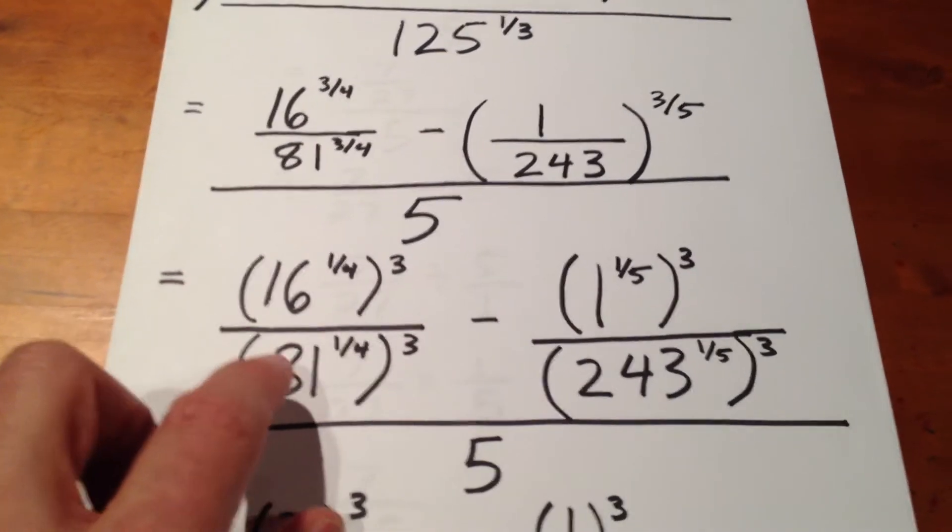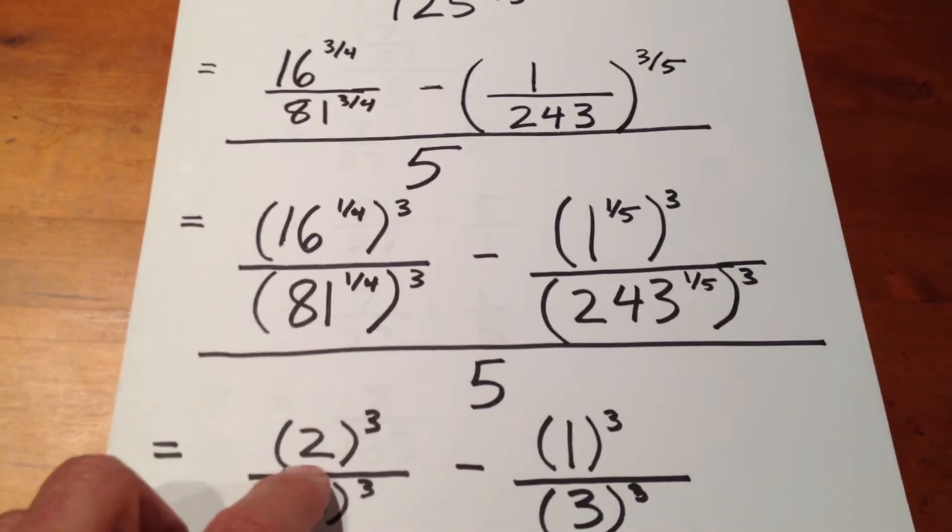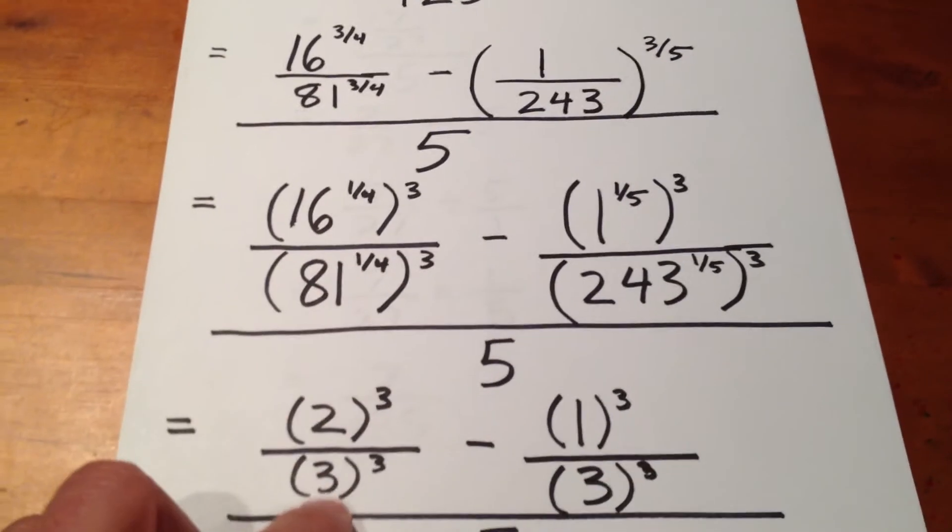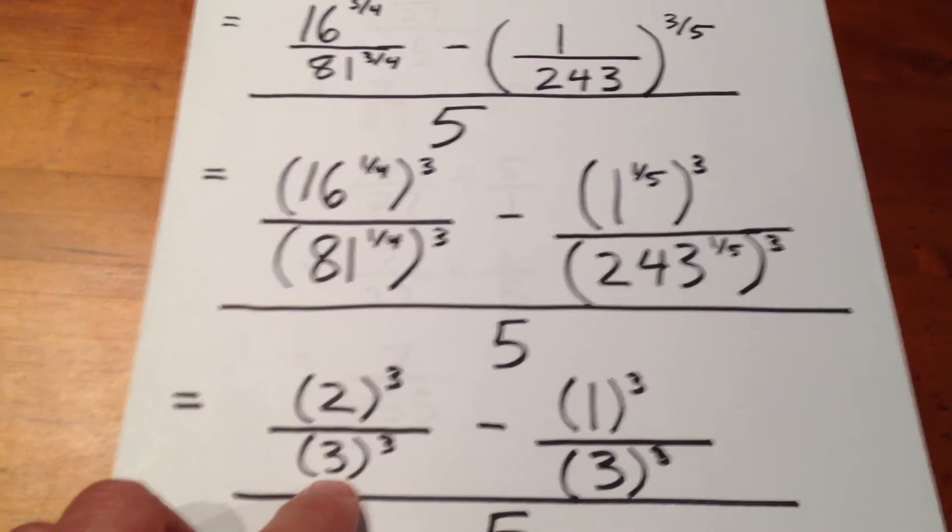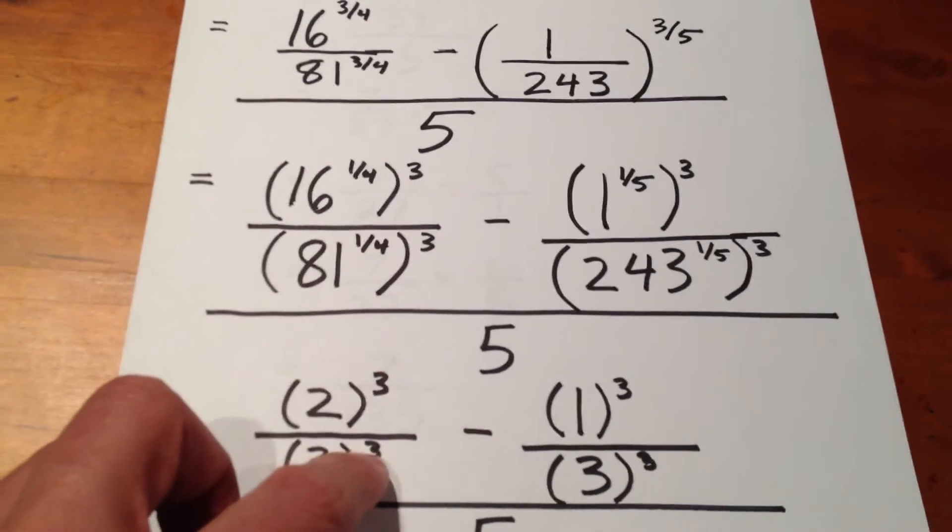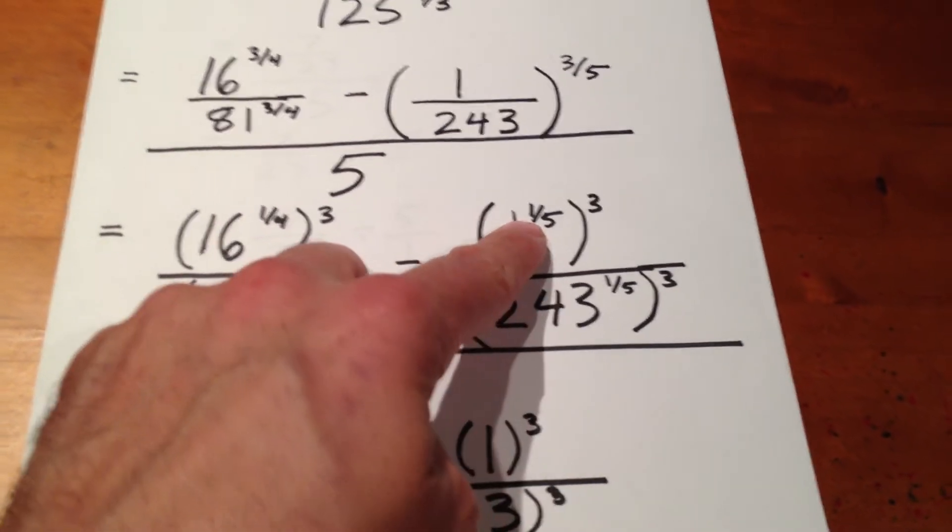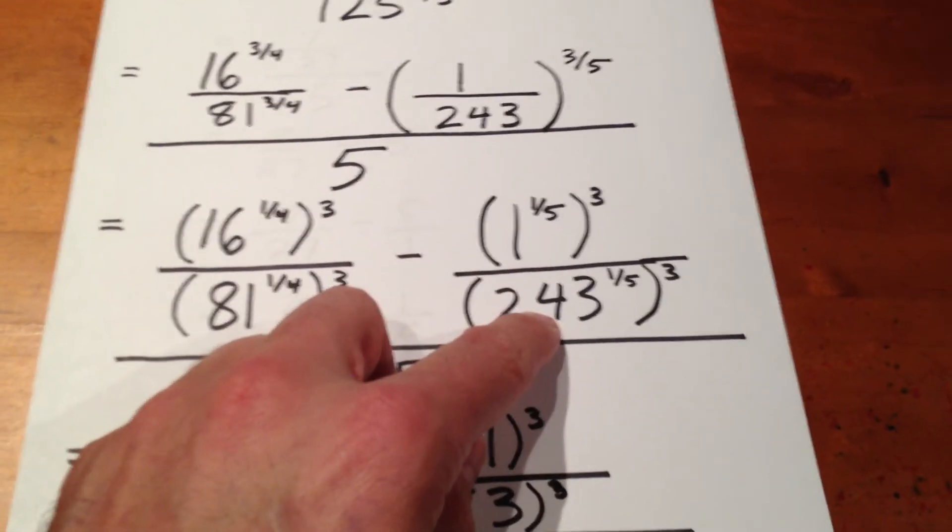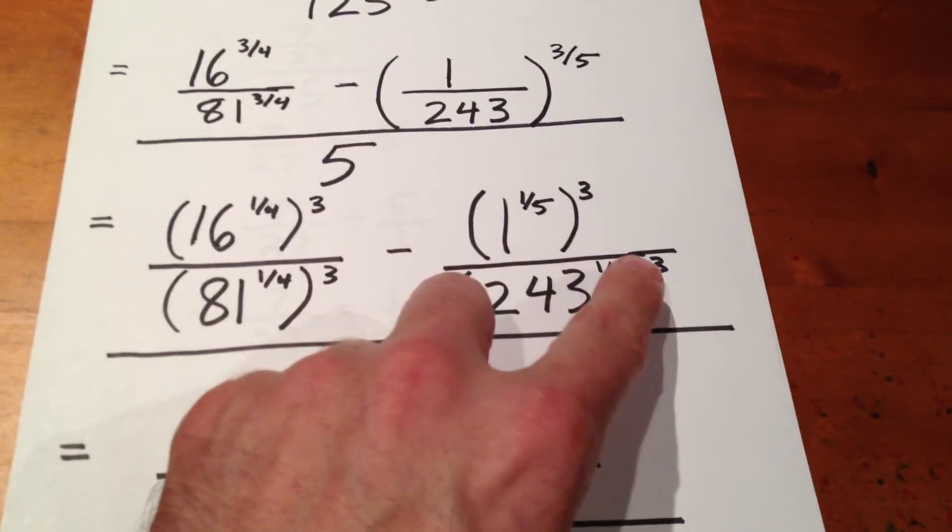16 to the one-quarter is 3, 81 to the one-quarter, or sorry, 16 to the one-quarter is 2, and 81 to the one-quarter is 3 because the fourth root of 16 is 2 and the fourth root of 81 is 3. We still have to cube each of these. The fifth root of 1 is 1, and the fifth root of 243 is 3. But, again, we still have to cube each of these results.